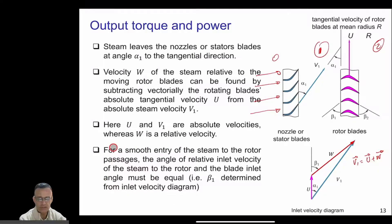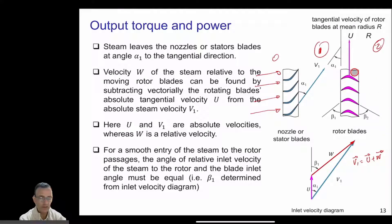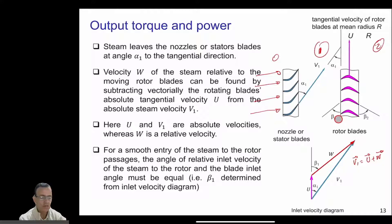An important condition for smooth entry of steam into the rotor passage is that the angle of the relative inlet velocity β₁, determined from the inlet velocity diagram, must equal the blade inlet angle. This is a design constraint: the blade must be shaped at angle β₁ so that the steam enters the rotor passage smoothly.